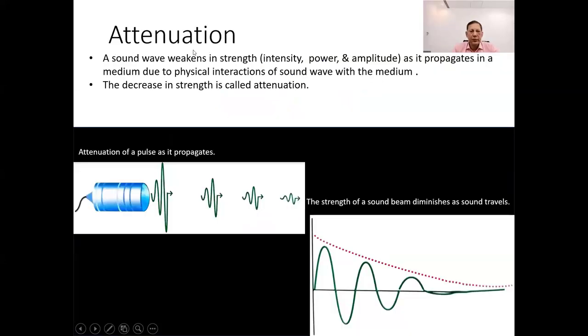Attenuation is weakening in strength of the sound wave as it travels through the body due to energy dissipation, as heat in form of absorption, or waves scattering in different directions.